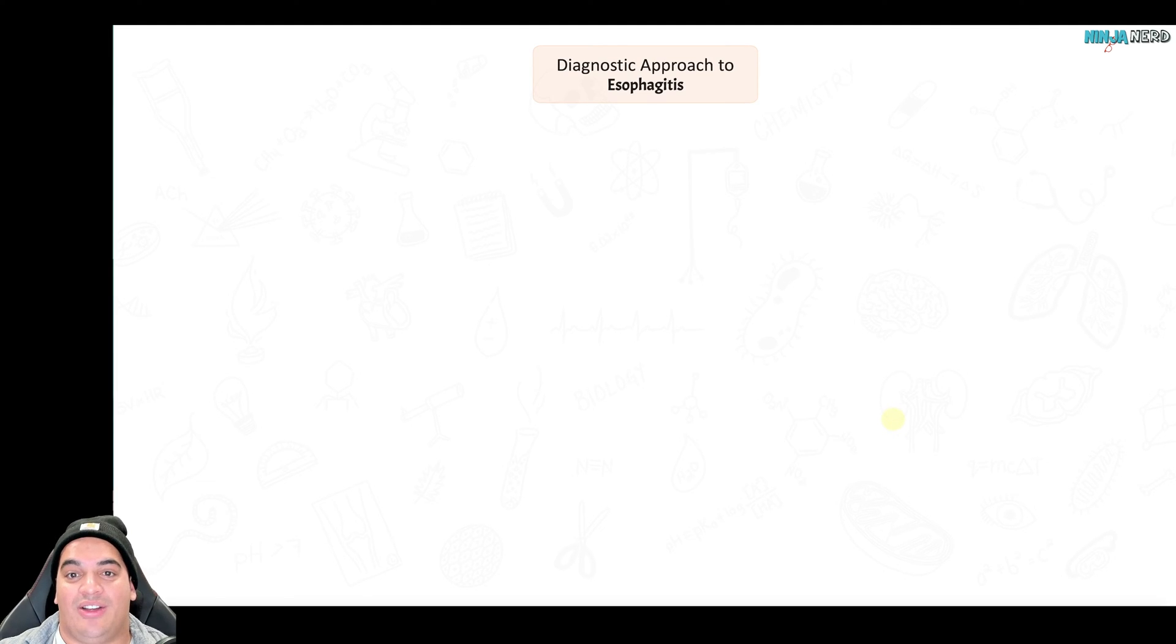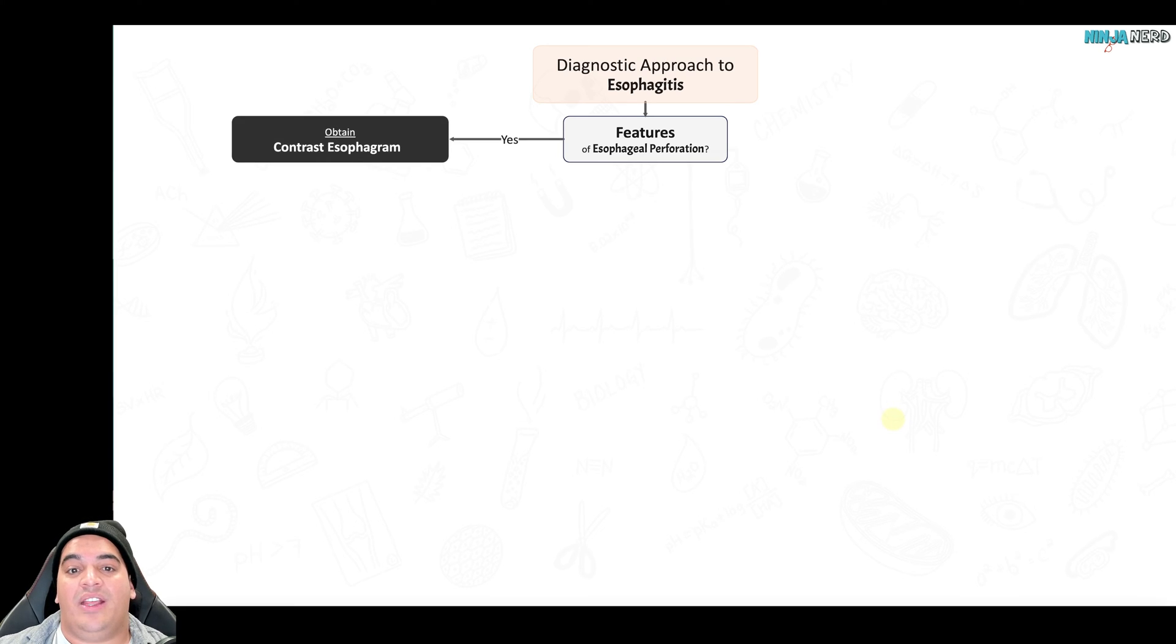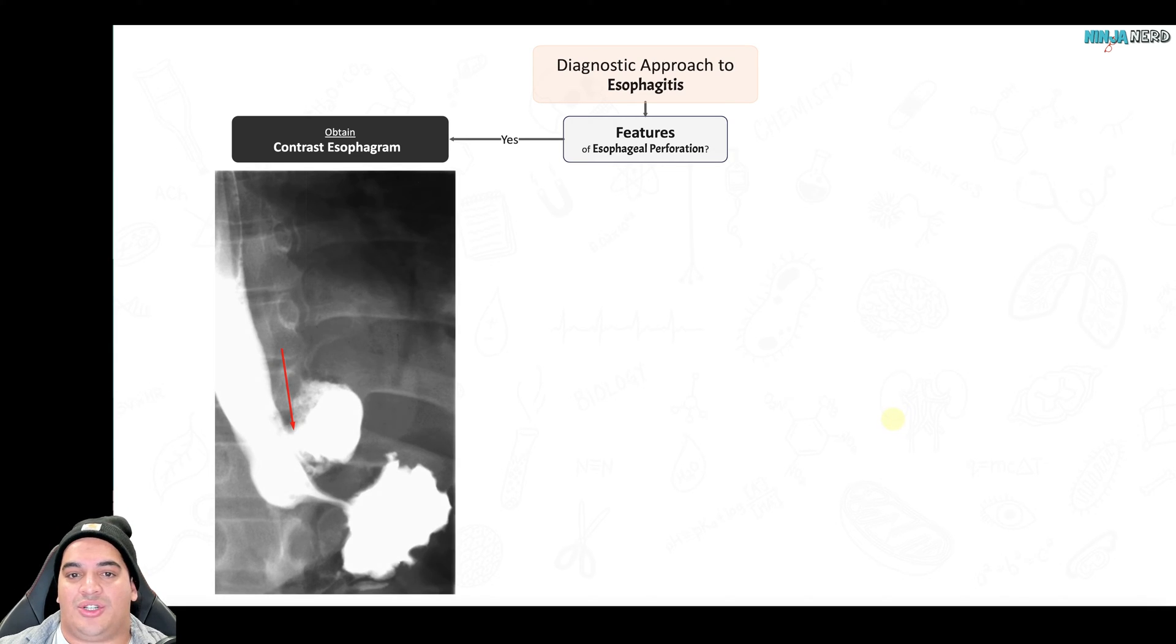We now move into the diagnostic approach to esophagitis. You're saying okay, there's a lot of different types of esophagitis, I don't really know how I'm supposed to figure them all out. I understand the complications and their classic presentation, but how do I determine which type of esophagitis? Well, the first thing that's really important is you have to first say: do they have any features of complications such as an esophageal perforation? Because this has a very high mortality rate if not caught.